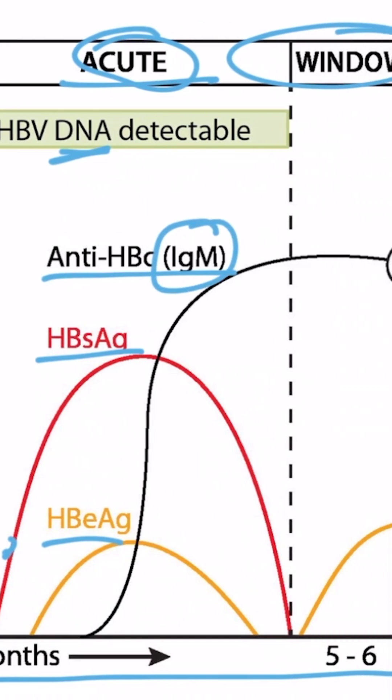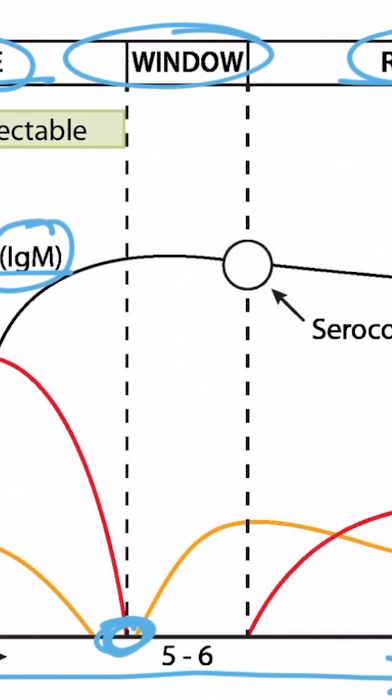And again, these are IgM. After about five to six months, this region right here, the surface antigen and the E antigen are no longer detectable. At this point, we've started what's called that window period, and that lasts about a month.